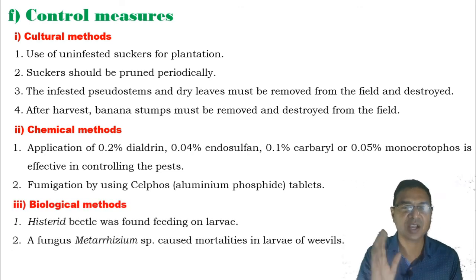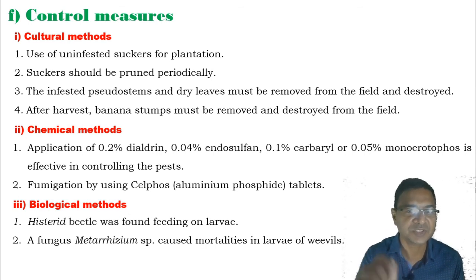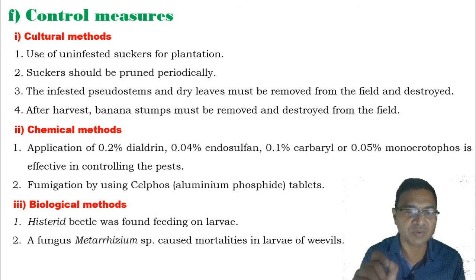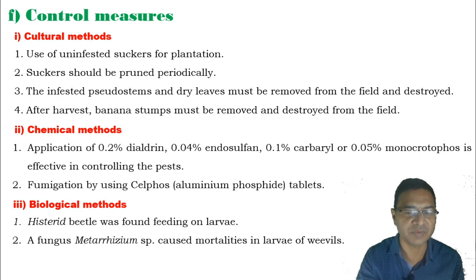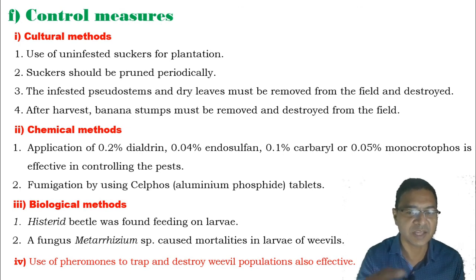For biological control, the histerid beetle specifically preys on larvae of Odoiporus longicollis and is very effective in controlling larval forms. The fungus Metarhizium species also causes mortality in the larvae by growing on them and impacting pest populations. Additionally, pheromone traps can be used to destroy the weevils and ultimately decline their populations.